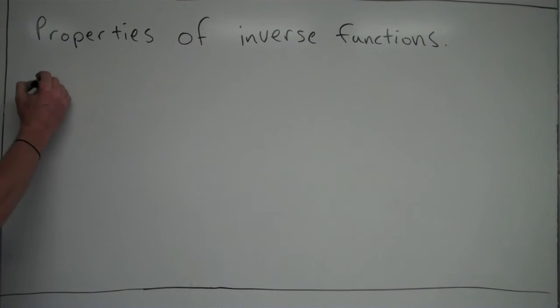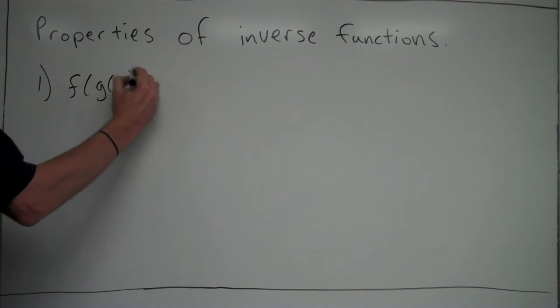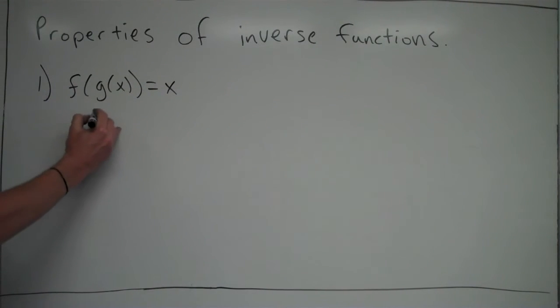So one thing that happens with inverse functions: let's call the inverse functions we're dealing with f of x and g of x. If f and g are inverse functions of one another, it's true that f of g of x is equal to x, and also that g of f of x is equal to x.